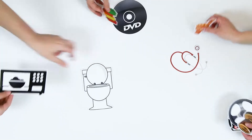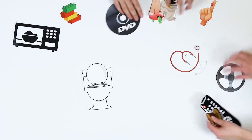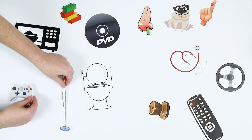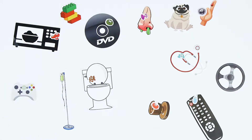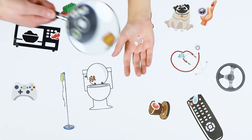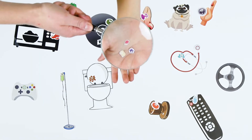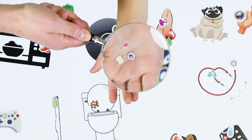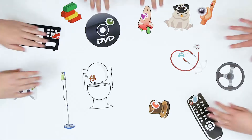When you touch an object with germs on it, the germs get on your hands. Most of the time you cannot see them, but they are there. Ew! They're on my hands! Oh no! That's why we need to clean our hands.